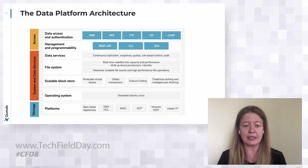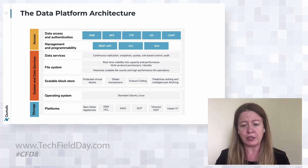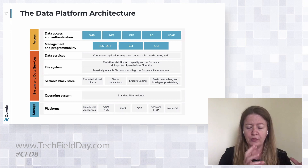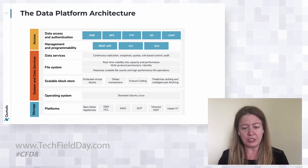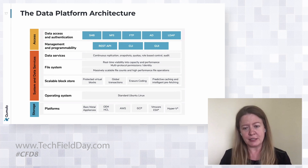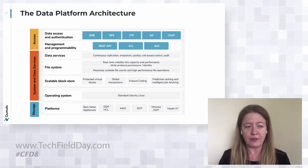Moving up the stack, data management means two things. There's moving the data to where the application resides or where users need it — replication, snapshot replication, capabilities that move entire projects or types of data from one location to another. Data management also means data protection: keeping copies of data and being able to roll back to previous versions. All of that is built into the Cumulo file system. We're a software subscription model, and that subscription includes everything — there are no separate charges for any features or functionality.